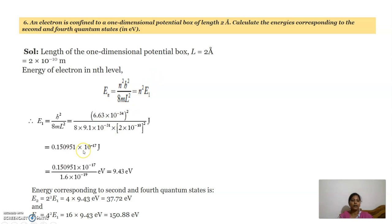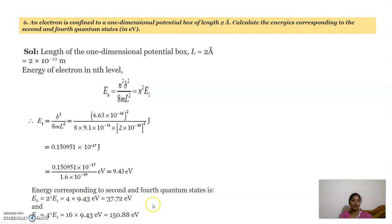We get E1 as 0.15 into 10 power minus 17 joules, which divided by 1.6 into 10 power minus 19 gives E1 equal to 9.43 electron volts. For the second quantum state, n equal to 2: E2 equals 4 times E1, giving 37.72 electron volts. For the fourth quantum state, n equal to 4: E4 equals 16 times E1, giving 150.88 electron volts.